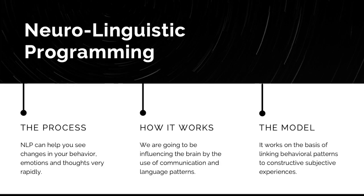The process of NLP is pretty straightforward. It can help you see changes in your behavior, emotions, and thoughts very rapidly. The beauty of NLP is that when it works, it works massively and it works quickly. The way it works is by influencing the brain through the use of communication and language patterns, and especially through our perceptual sensations. Your brain can be influenced by certain stimuli related to your senses, and the model works on the basis of linking behavioral patterns to constructive subjective experiences.